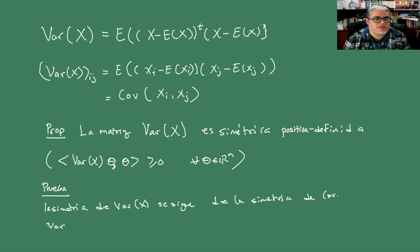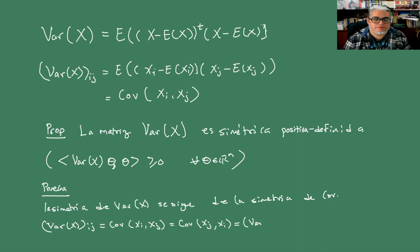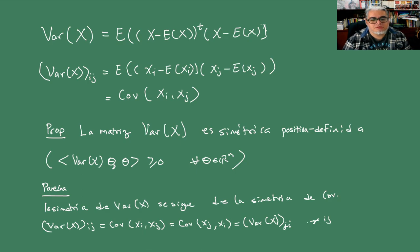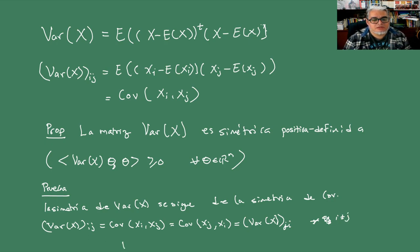Lo que queremos ver es qué pasa con el elemento ij: quedamos que es igual a la covarianza de xi y xj, pero la covarianza de xi y xj es lo mismo que la covarianza de xj con xi, que es el elemento ji-ésimo de la matriz de varianza. Entonces la matriz es simétrica para cualquier i, j distintos, así que la traspuesta de esta es la misma.